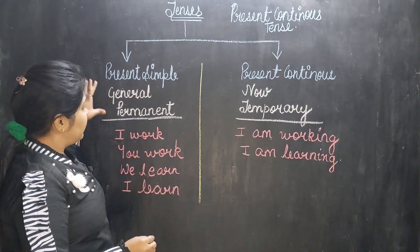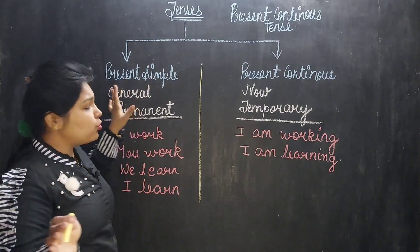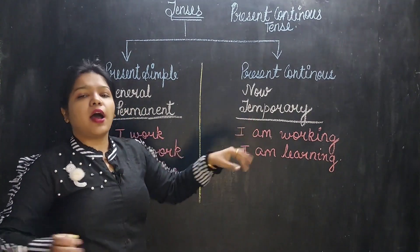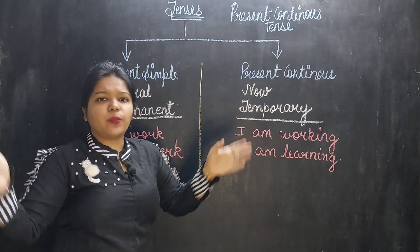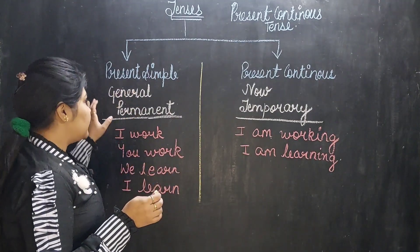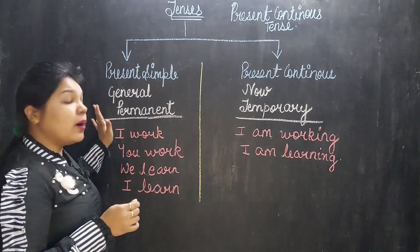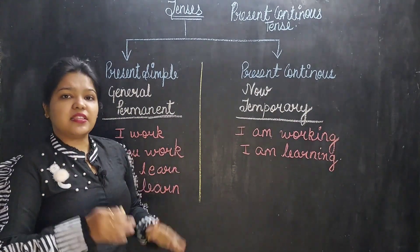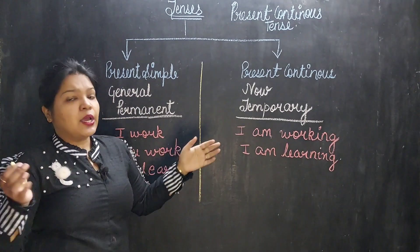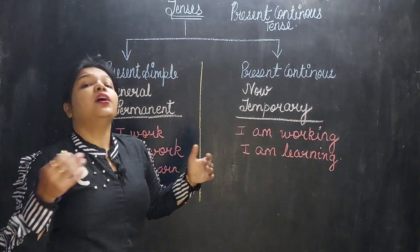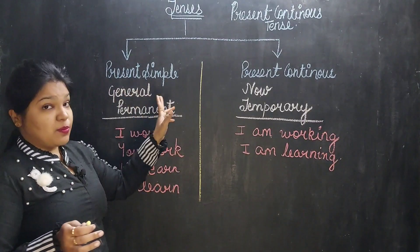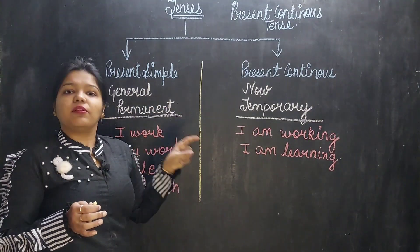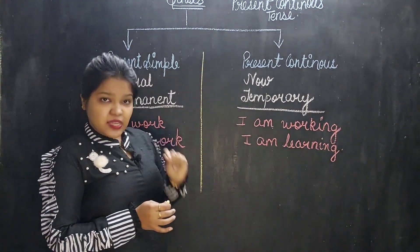Present simple, I have just already told you about. This is talking about general things. I work, I brush my teeth, I go to my office. This is a general thing. And what about the permanent things? Permanent: earth moves around the sun, sun rises in the east. These are all the permanent things. Means no one can change. Present simple tense talks about the general and the things which are permanent.